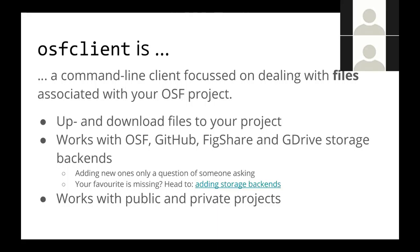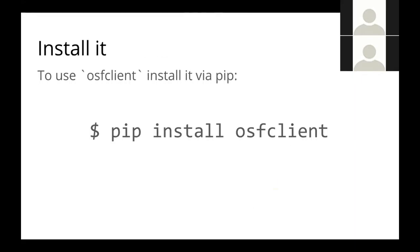If your favorite storage backend is missing, the slides will have a link to an issue we use to track which ones already work and which ones are still missing, with instructions on how to make your favorite one work. It works with both public and private projects, so you can already use it before you want to make everything public. To install it, all you should have to do is type 'pip install osf client.'